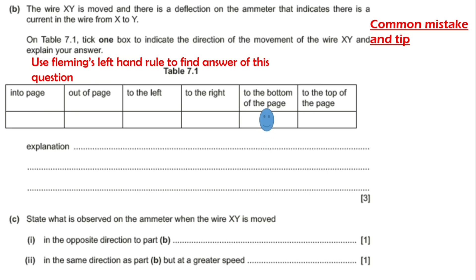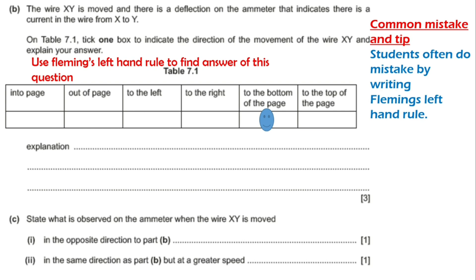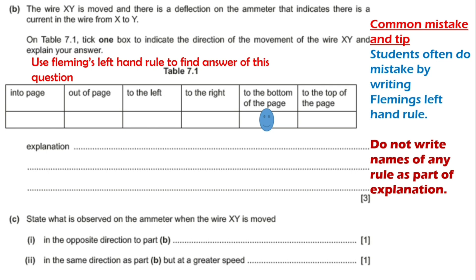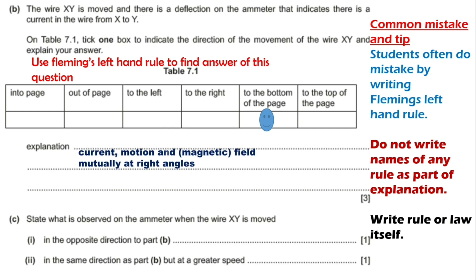A common mistake made by students is writing 'Fleming's left hand rule' as part of the explanation. The examiner's comment is: do not write the names of any rule as part of the explanation — write the rule or law itself. In this question you need to explain why you chose the answer 'to the bottom of the page,' and the explanation is: current, motion, and field lines are mutually at right angles.